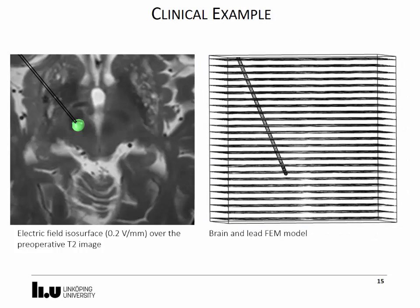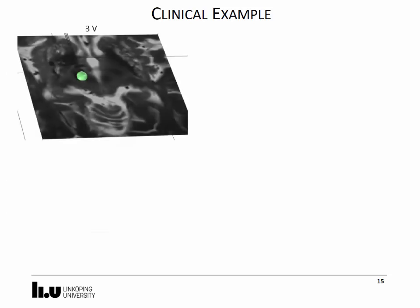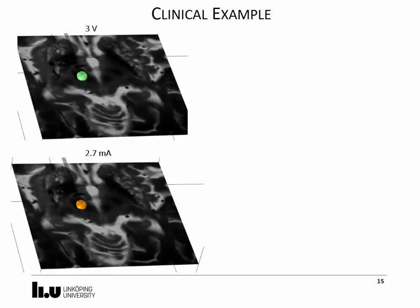The first electrode was set to 3 volts in a monopolar configuration, and the same model was used to simulate current control stimulation.